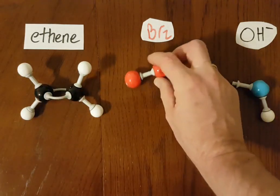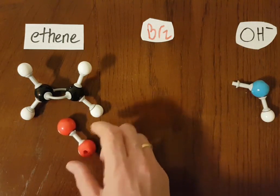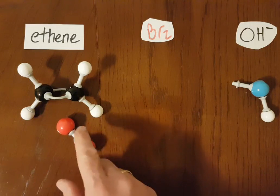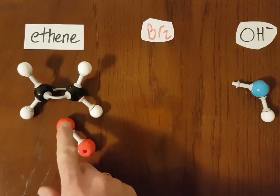So, same as usual. The bromine goes along. There's an induced dipole. This ends up a little bit positive. This ends up a little bit negative, and this bond will break and bond onto that bromine.